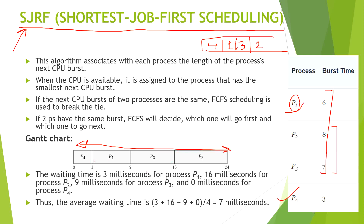As you can see in the Gantt chart, process 4 will be executed till 3 units of time. After that process 1 will execute for the next 6 seconds. P3 will execute for 7 seconds and process 2 will execute for the next 8 seconds.